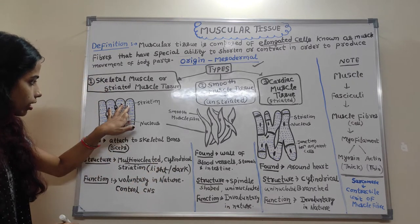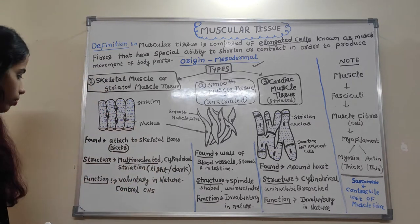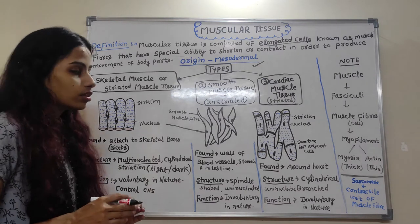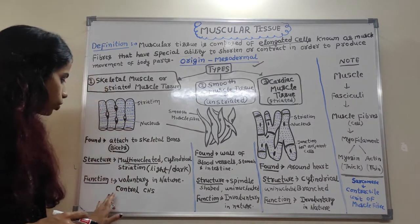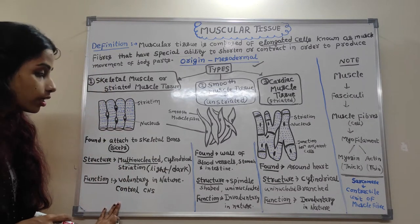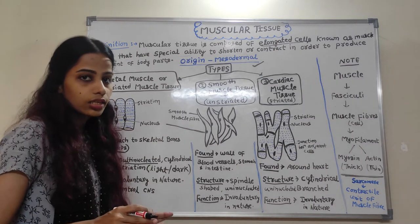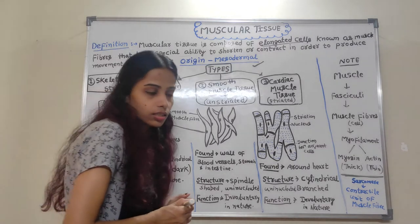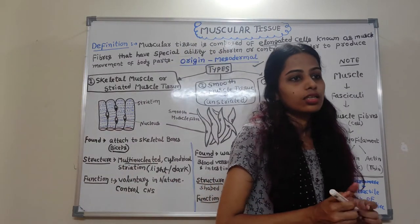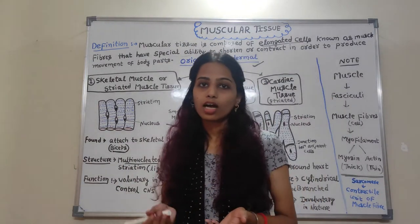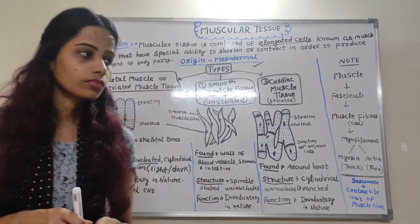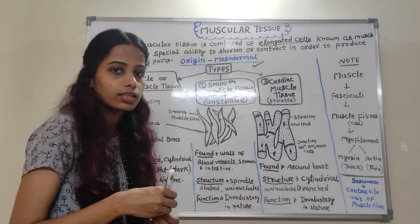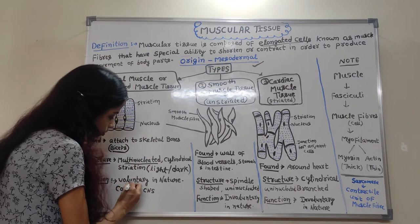The function of skeletal muscle tissue is that it is controlled by the central nervous system and it is voluntary in nature. Voluntary means we can move our skeletal muscle by our own desire — we can do anything by our own will.